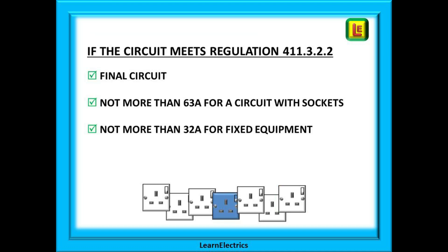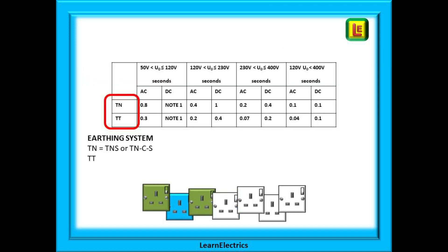Moving on: if the circuit meets regulation 411.3.2.2 then it will be a final circuit and will not exceed 63 amps for a circuit with sockets, nor exceed 32 amps for a circuit with fixed equipment. We are going to use table 41.1 now for a few examples.